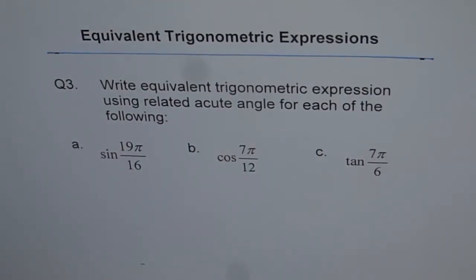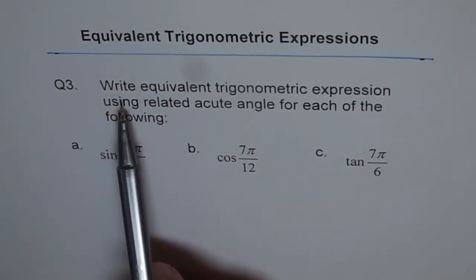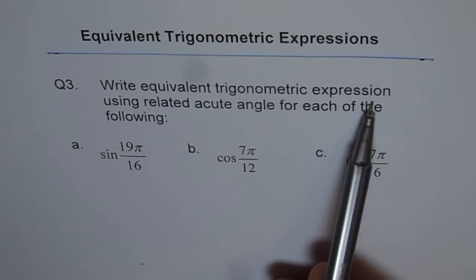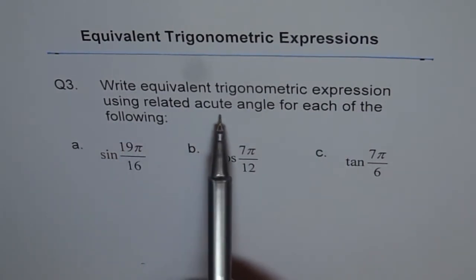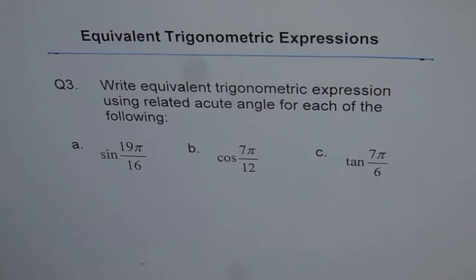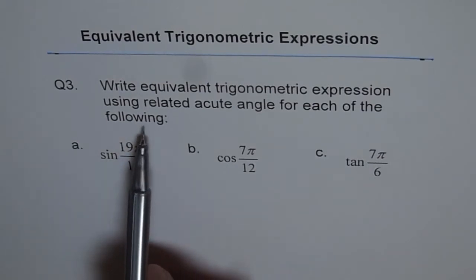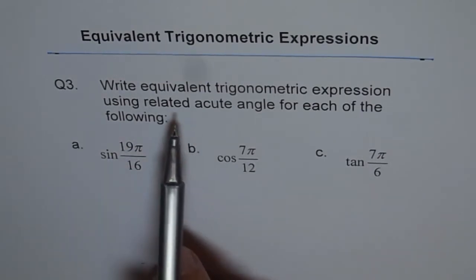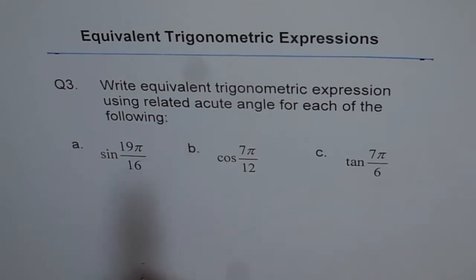Equivalent trigonometric expressions. Question 3. Write equivalent trigonometric expression using related acute angle for each of the following. That means we have to write only one relation and we have to use only related acute angle. That is what it means.